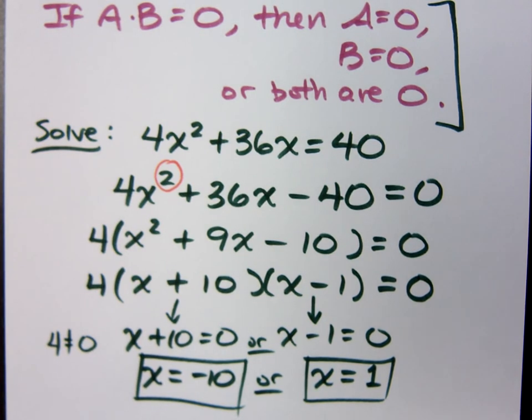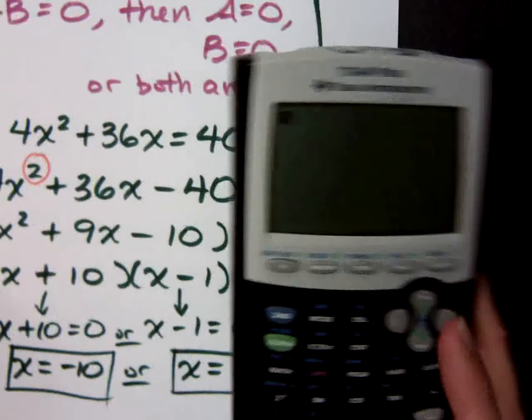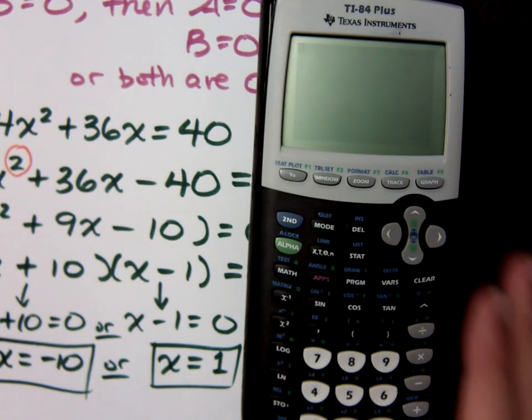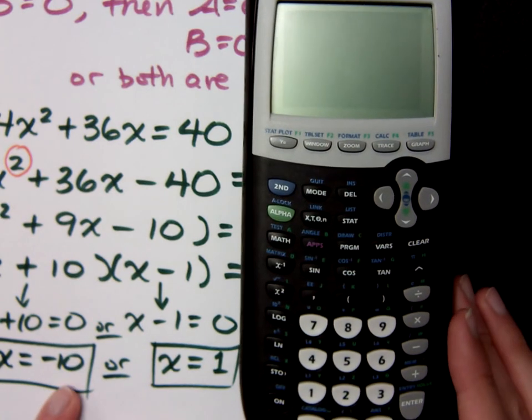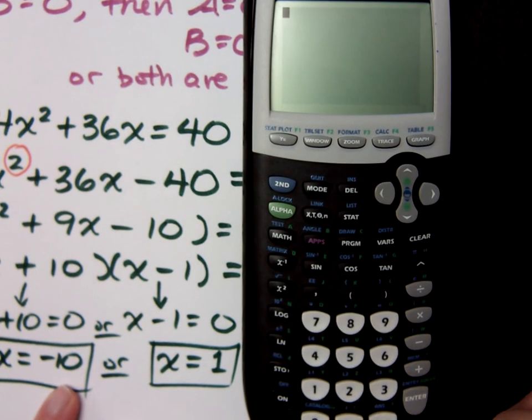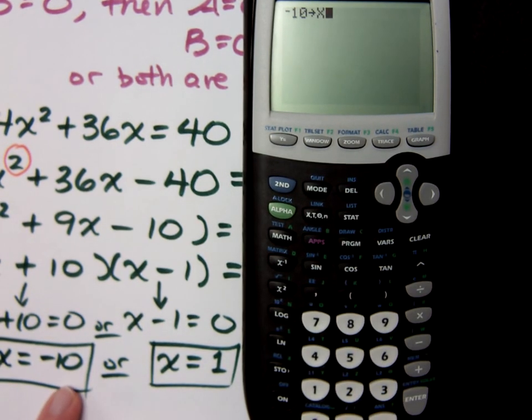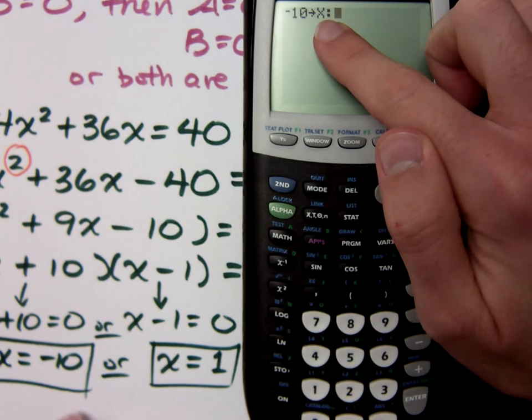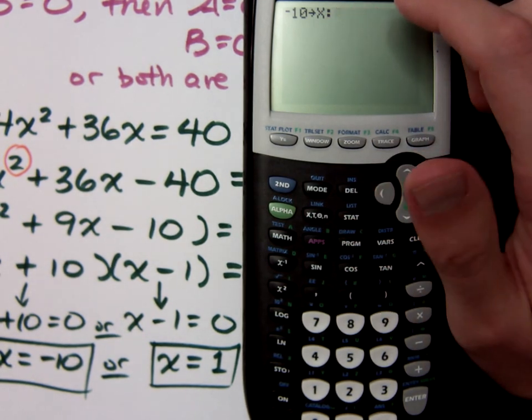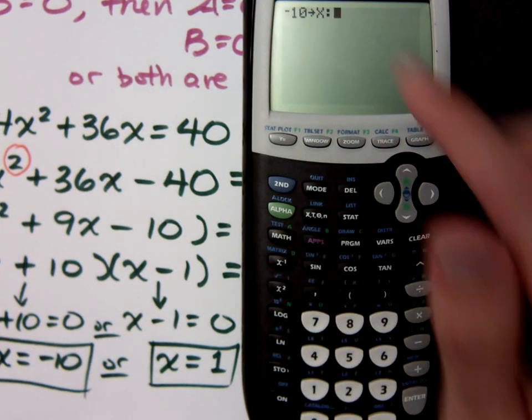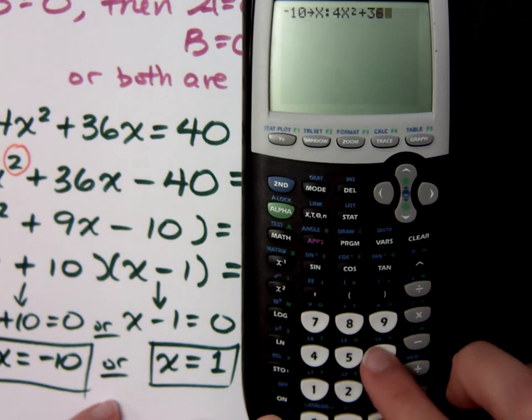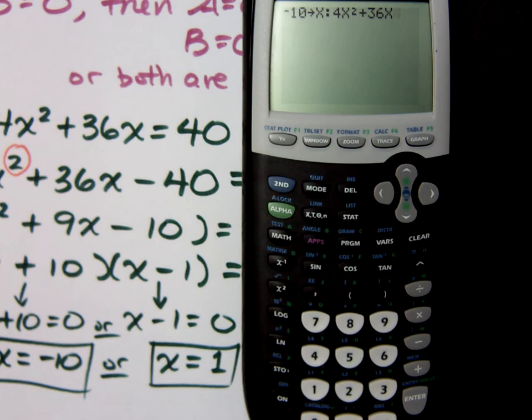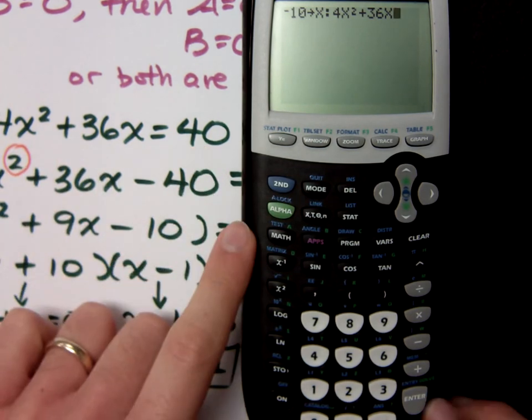But you know what? We talked yesterday about how we can check our work. So let's do that. I'm going to slide this guy over. Now, I say, and I'm going to maintain that these are my solutions. If I store negative 10 into x, okay? Now, don't hit enter. You know where we had the i above the decimal? If I press alpha instead of second, I get this colon. Now, what this colon will do is it will separate commands in your calculator. So the first thing I'm telling it to do is to store negative 10 into x, and then I want to evaluate 4x squared plus 36x. What in my original equation is 4x squared plus 36x supposed to equal? 40. And it does.